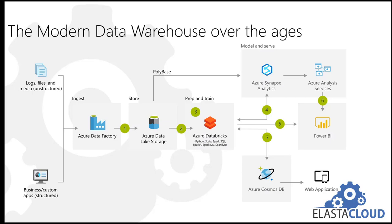Lambda architecture is a very common way of describing how we can take a batch layer, a streaming layer, and a serving layer and put them into one architecture. The holy grail for most of us is an integrated solution which allows us to perform these lambda architectures where at any point in time we can query the state of a data source being continually updated via batch and streaming.